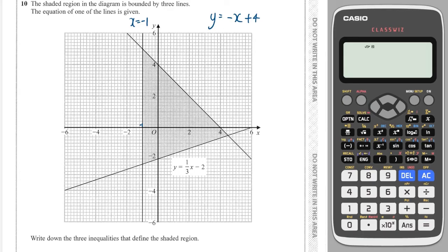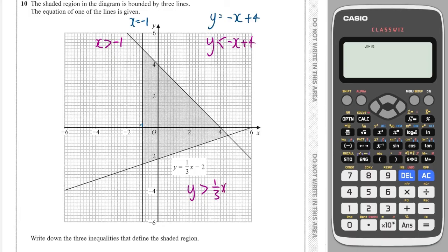I've got my three equations and now I've got to figure out which way to put the inequality signs. The area is to the right of the X equals minus one line, so X is going to be greater than minus one. This line — we want the region to be below it, so we write Y is less than minus X plus four. And this line, which is given to us — we want it to be above that line, so we write Y is greater than a third X minus two.